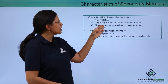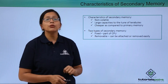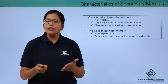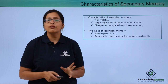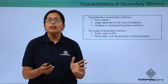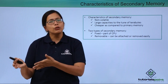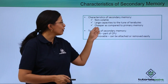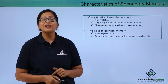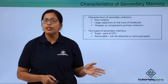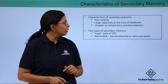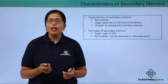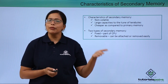It has large capacities, to the tune of terabytes. As we discussed in the previous video, RAM's maximum is 1 GB or 2 GB of memory space. However, for secondary memory, we can have terabytes of memory. It is also cheaper as compared to the primary memory.